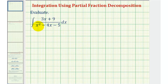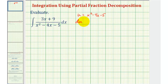Notice how the denominator is degree two and the numerator is degree one, and therefore we might try to let u equal the denominator of x squared minus four x minus five. Notice if we do this, du would be two x minus four times dx, and this does not fit the form of the given integral.